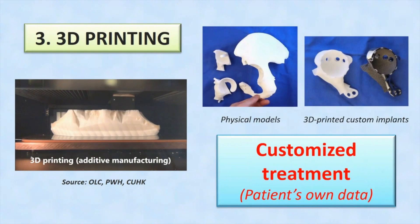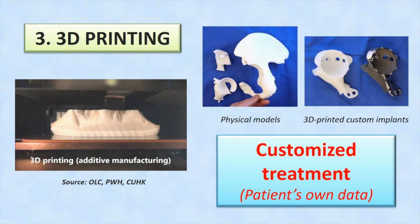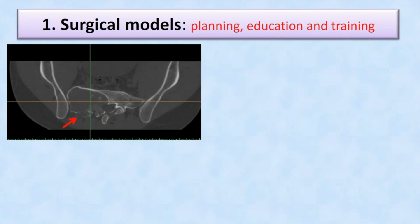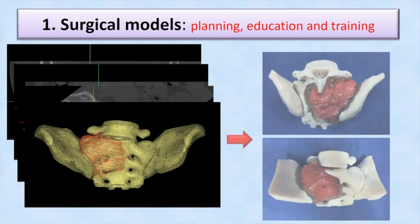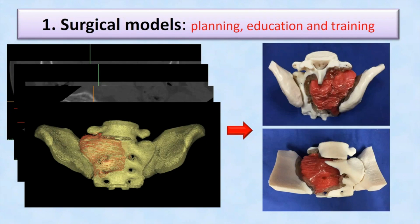Physical models and custom implants are then fabricated layer by layer by 3D printing technology, used for customized treatment based on patient-specific data. One of the main applications in 3D printing is the creation of a surgical model, providing both tactile and visual understanding of surgical anatomy and pathology, which are important for surgical planning and training.